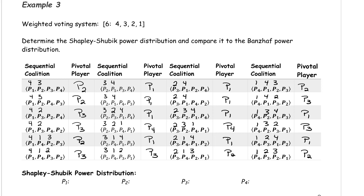The rest of the table is now filled in. For sequential coalitions starting with P3: (3,1,2,4) pivotal is P1; (3,1,4,2) pivotal is P1; (3,2,1,4) pivotal is P1; (3,2,4,1) pivotal is P4; (3,4,1,2) pivotal is P1; (3,4,2,1) pivotal is P2. For coalitions starting with P4: (4,1,2,3) pivotal is P2; (4,1,3,2) pivotal is P3; (4,2,1,3) pivotal is P1; (4,2,3,1) pivotal is P3; (4,3,1,2) pivotal is P1; (4,3,2,1) pivotal is P2.